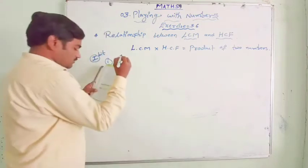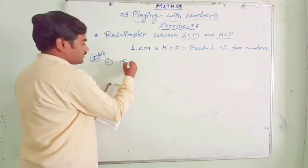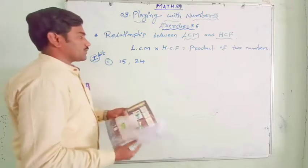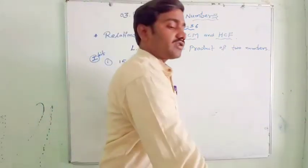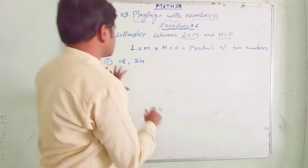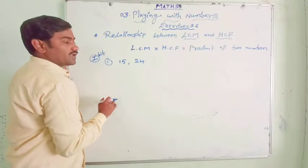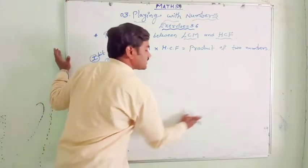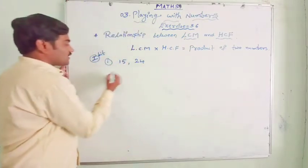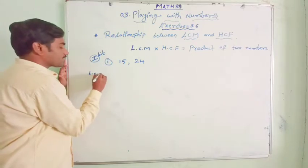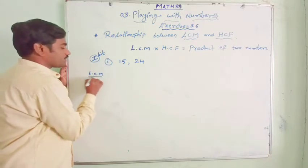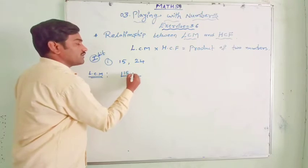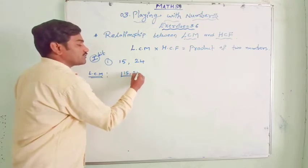First of all, let us find the LCM and HCF of 15 and 24. We will find the LCM of these two numbers and also check the relation. Is it satisfied or not? Let us find out the LCM. We will use the division method. So, 15 and 24.